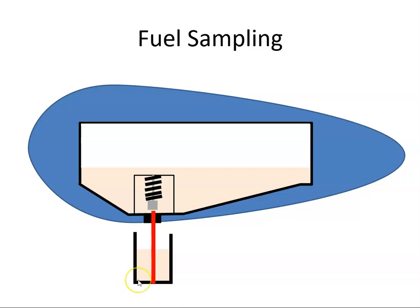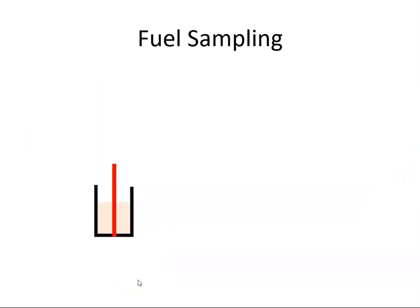Once the sample is taken, the sample jar is removed and a visual inspection is performed. Looking through the jar, if there is any free water, you would see it at the bottom of the sample jar. You're looking for little droplets or cloudy portions in the fuel, which would indicate entrained water.